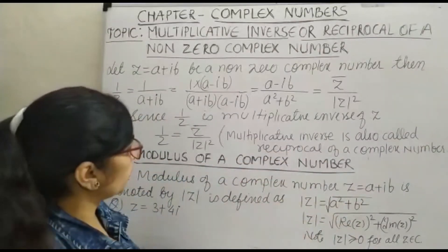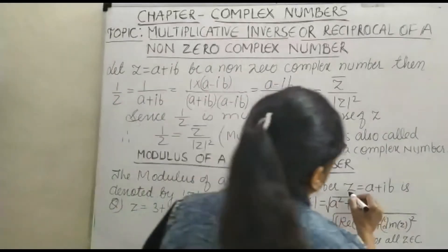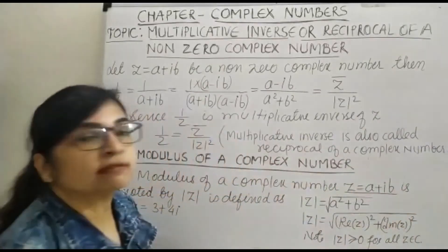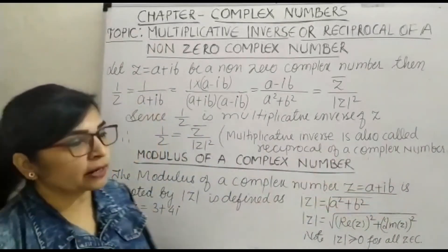Let us see what the modulus of a complex number means. Suppose we have a complex number z equals a plus ib, where a is the real part and b is the imaginary part.